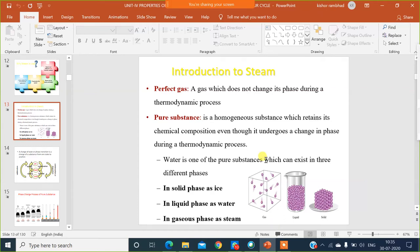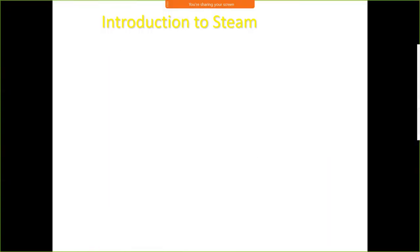Good morning everyone. This is lecture number 27 of Engineering Thermodynamics. In the last lecture we started a new unit, unit number 4: properties of pure substance. The first part is properties of pure substance in which we study about steam. We have seen three different forms of water: liquid, solid, and gaseous. Today we will see how liquid is converted into steam and what are the different processes to transform liquid into vapour.